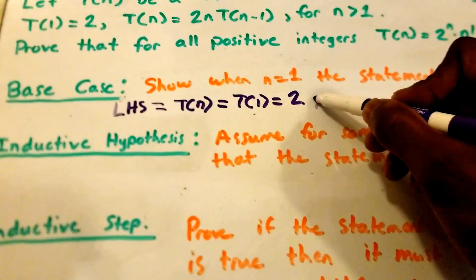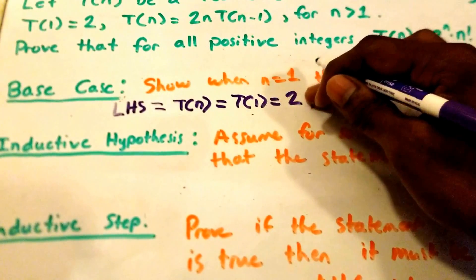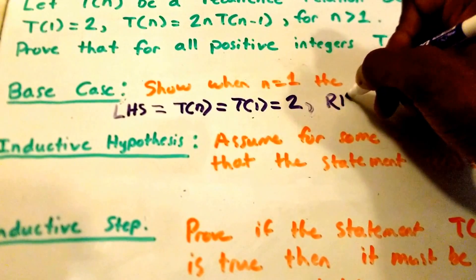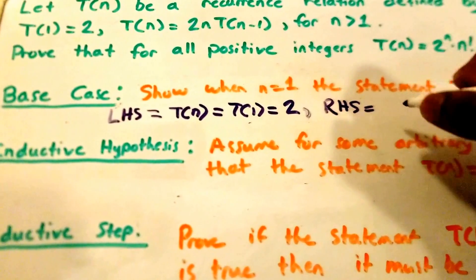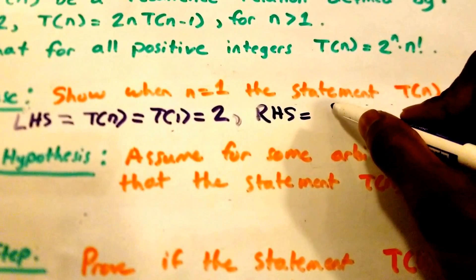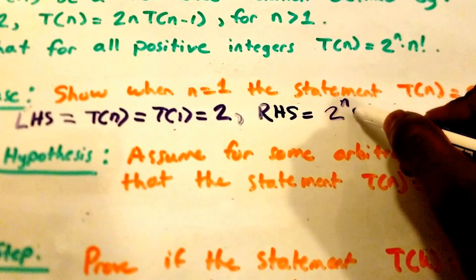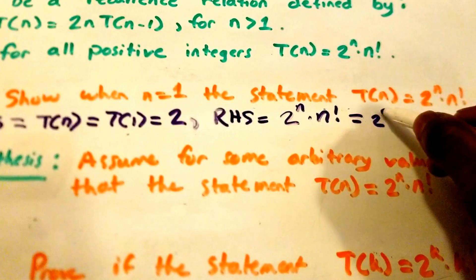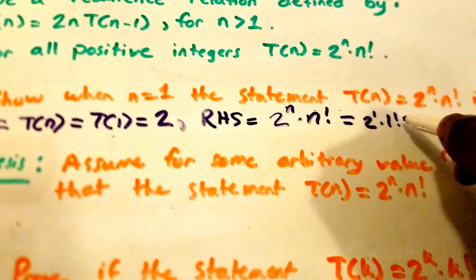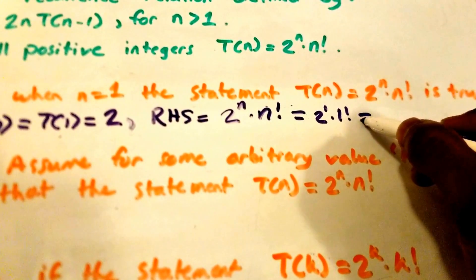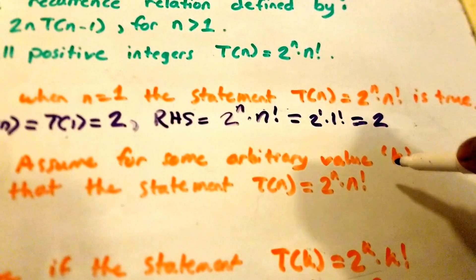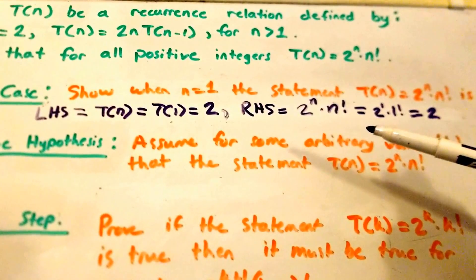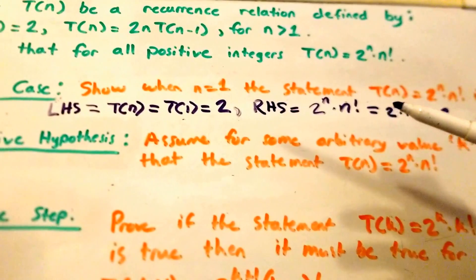In order for our base case to be true, the left-hand side and right-hand side must both match. Using RHS for right-hand side, the right-hand side of the statement is 2 to the power of n times n factorial. When n equals 1, we get 2 to the power of 1 times 1 factorial, which equals 2. So our left-hand side and right-hand side are both equal to 2, meaning our base case is true.